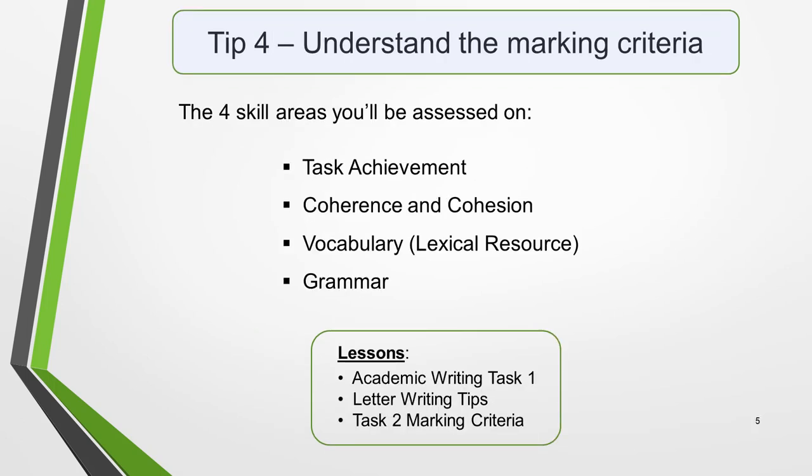Tip 4: Understand the marking criteria. To get a high score in the IELTS Writing Exam, you need to know exactly what the examiner wants. So an important step to achieving success is to understand the marking criteria. Here are the four skill areas you'll be assessed on: Task Achievement, Coherence and Cohesion, Vocabulary (also called Lexical Resource), and Grammar. Each carries 25% of the marks. You can learn more about them in these lessons: Academic Writing Task 1, Letter Writing Tips, and Task 2 Marking Criteria.